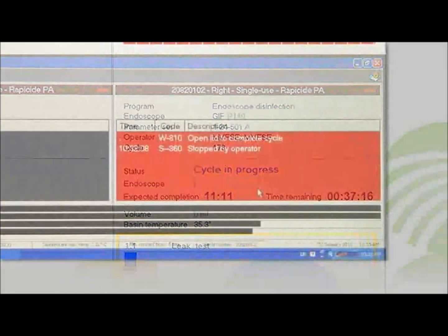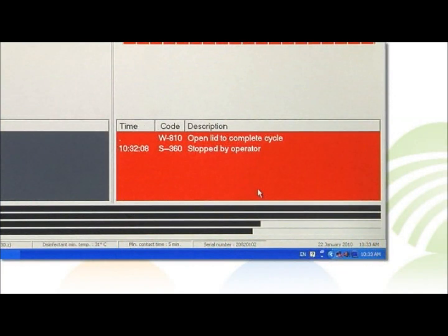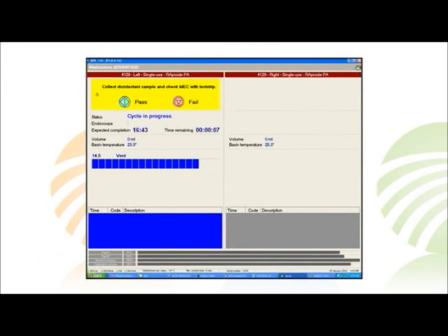Program messages including error messages will be indicated in the box noting the time, error code, and description. When the disinfection process is complete, the program screen will prompt the operator to test the high-level disinfectant MEC with a test strip.